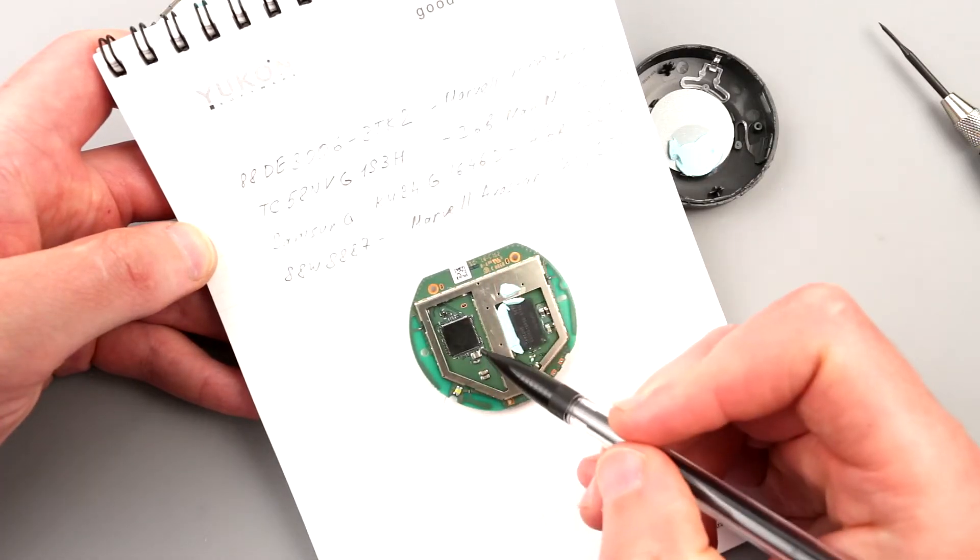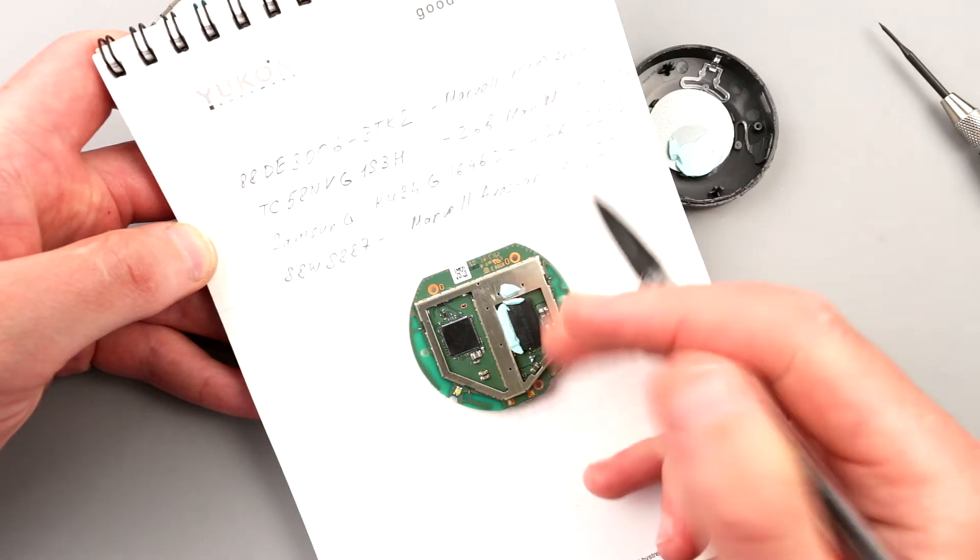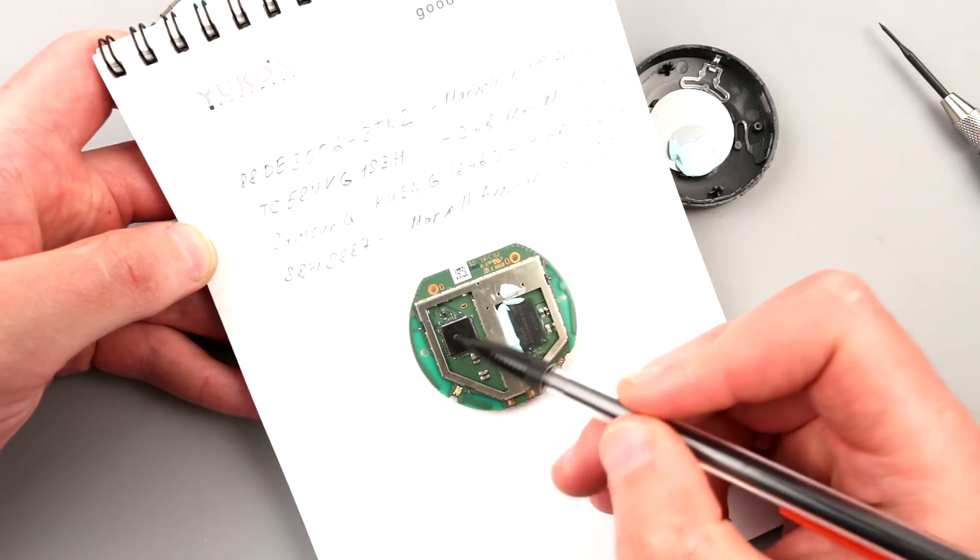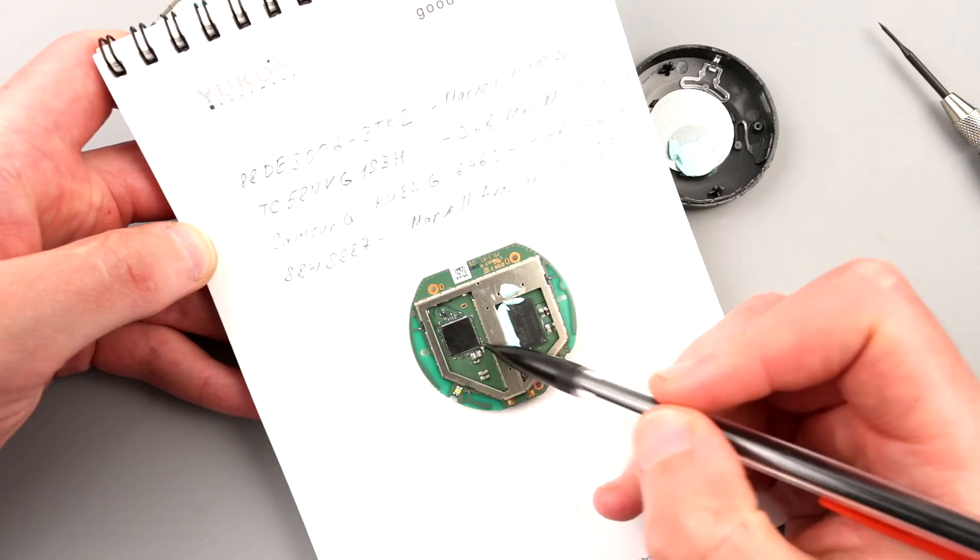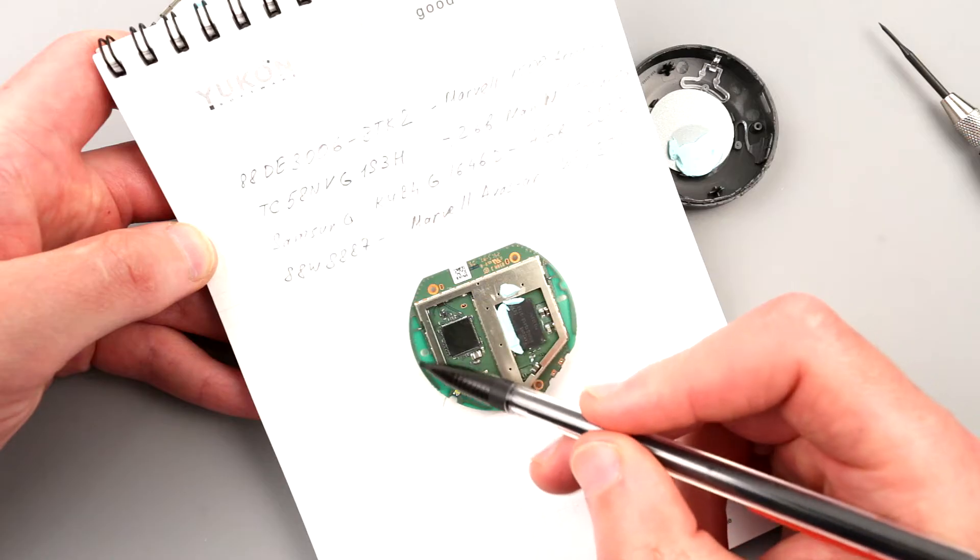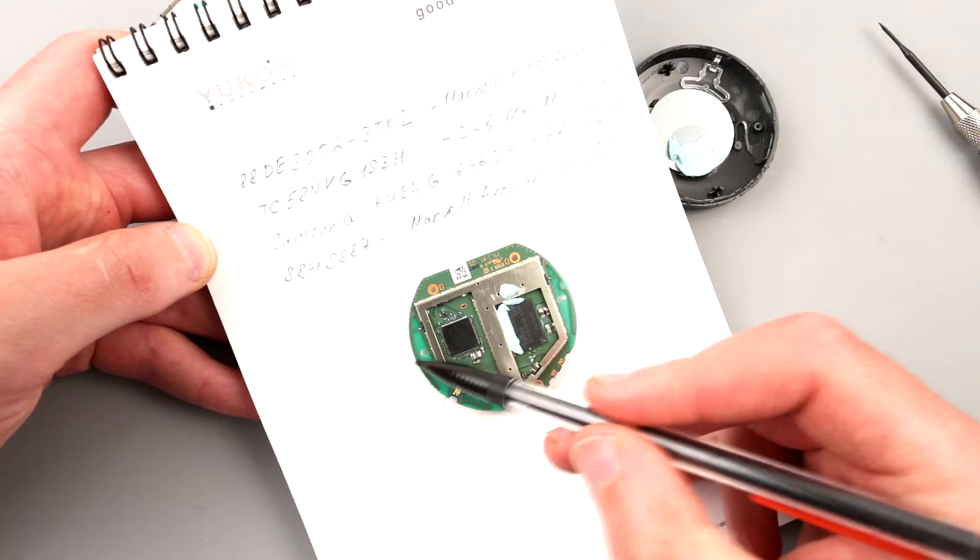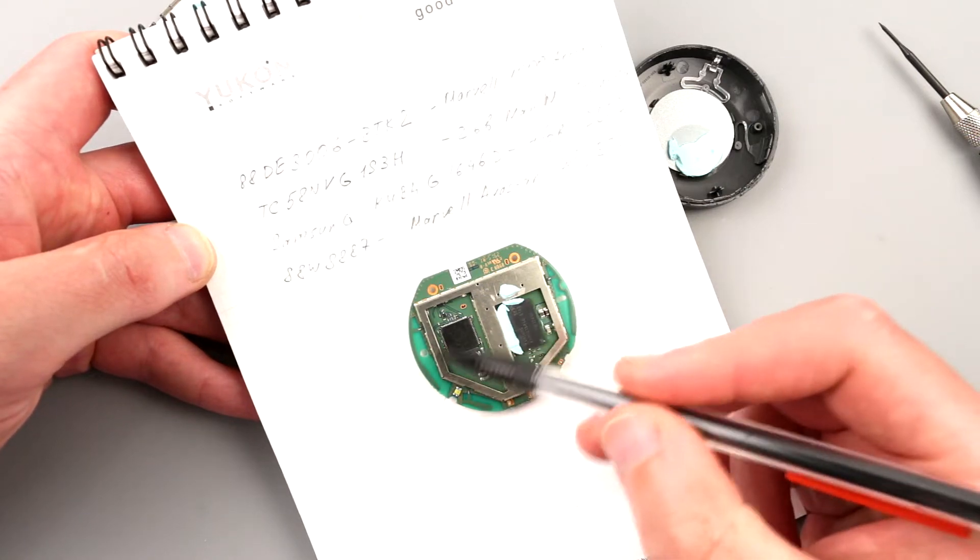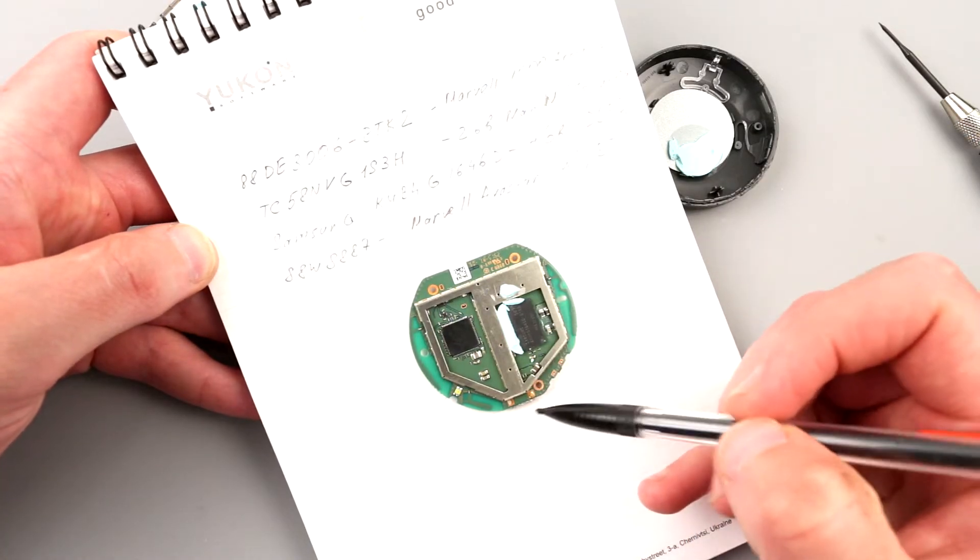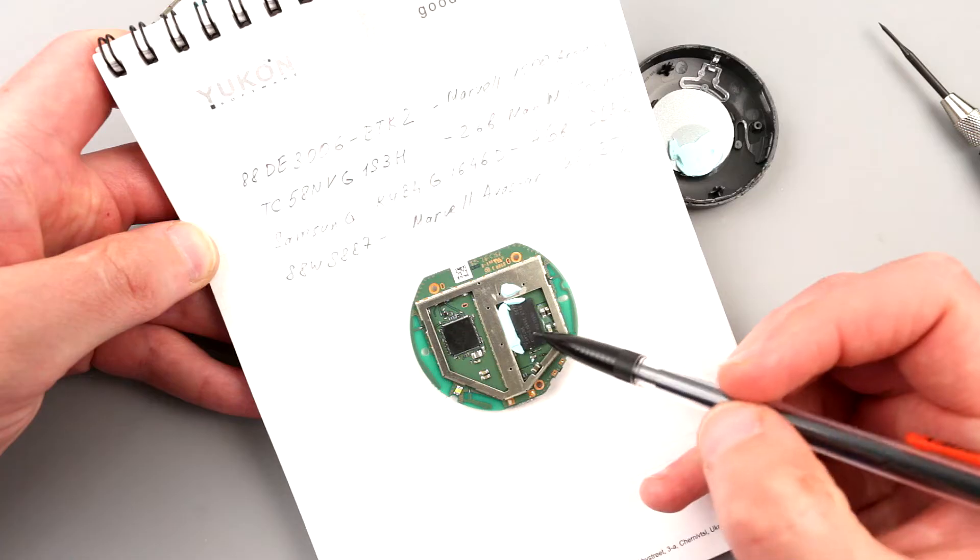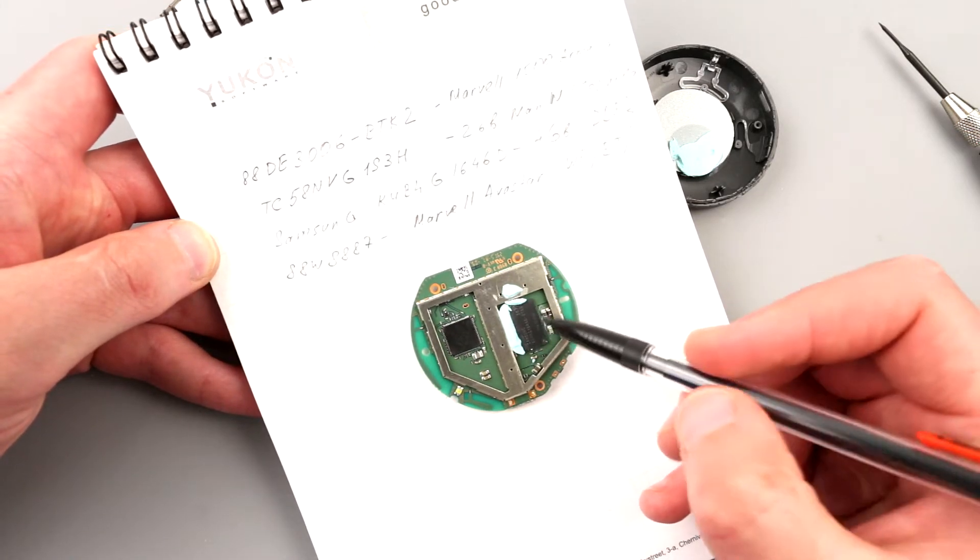On the other side we have this Marvell Avastar, which is WiFi, Bluetooth, NFC and other things. But apparently it just uses WiFi because if you look closely there is one antenna, second antenna, and another one over here. It potentially does have Bluetooth, maybe one of the pairings using Bluetooth, but definitely not NFC because there's no NFC antenna.